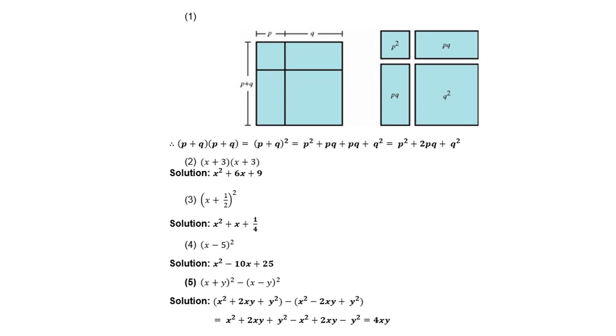Number 4: x times x is x². X times negative 5 times 2 is negative 10x. And negative 5 times negative 5 is positive 25. The next number 5: (x + y)² on its own will give you x² + 2xy + y². And the other bracket, the same: x² - 2xy + y². Get rid of the brackets and then collect your like terms. And the answer should be 4xy.